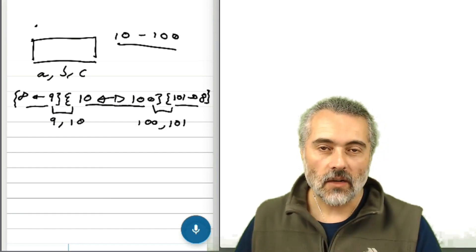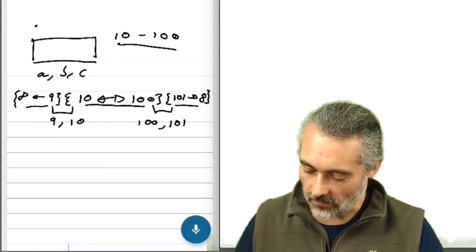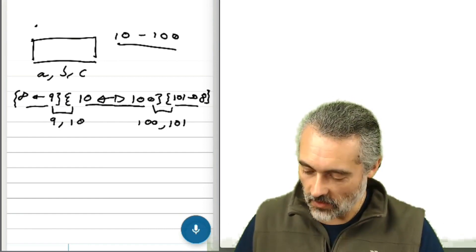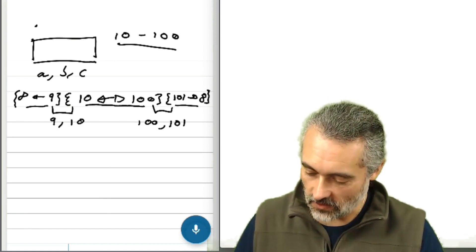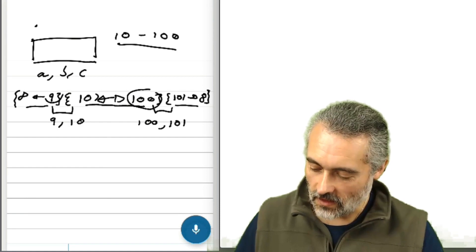So traditionally, that would be a fairly traditional boundary value analysis. We want something in the valid boundary, something on the invalid boundary. So on the valid, something on the invalid, something on the valid, something on the invalid.